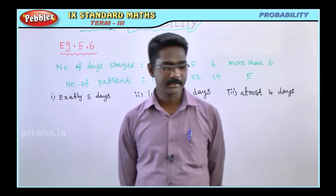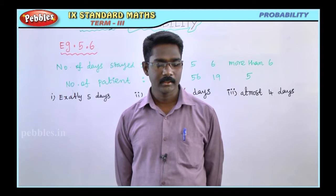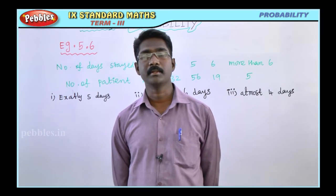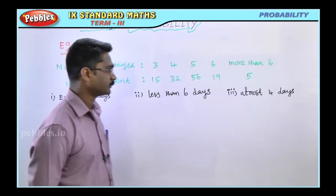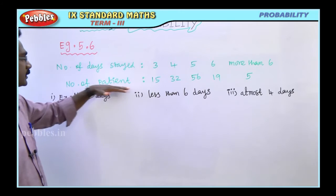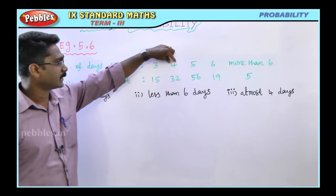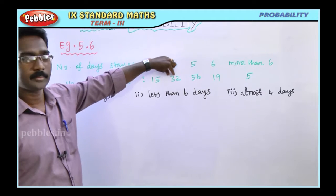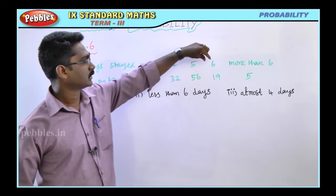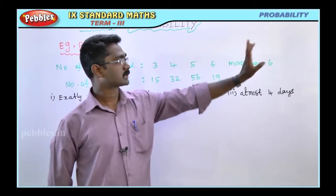For example 5.6, the hospital record indicated that maternity patients stayed in the hospital for the number of days shown in the following table. The number of days and number of patients: 3 days - 15 patients, 4 days - 32 patients, 5 days - 56 patients, 6 days - 19 patients, more than 6 days.